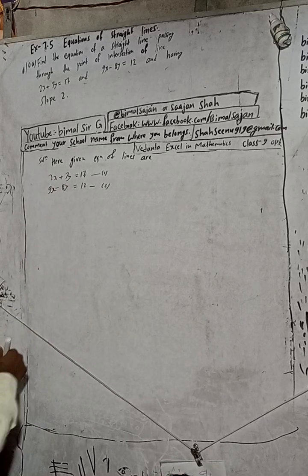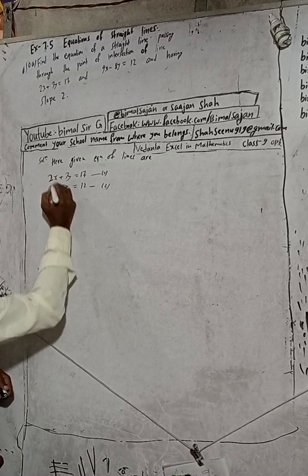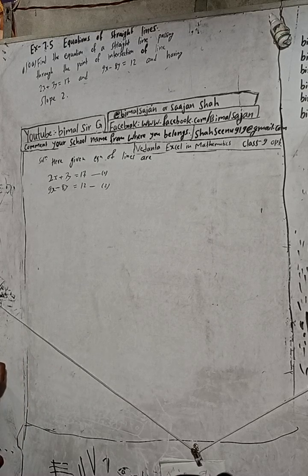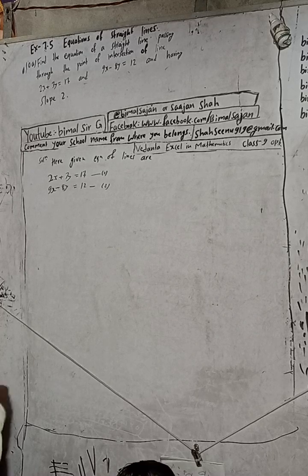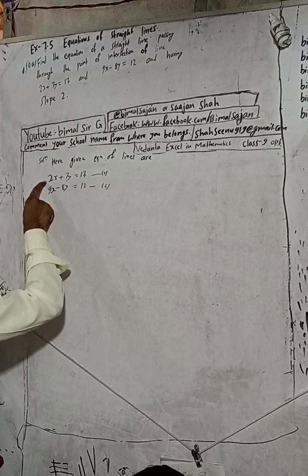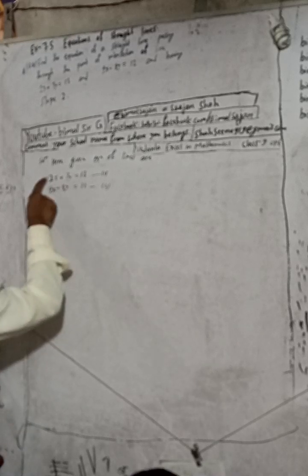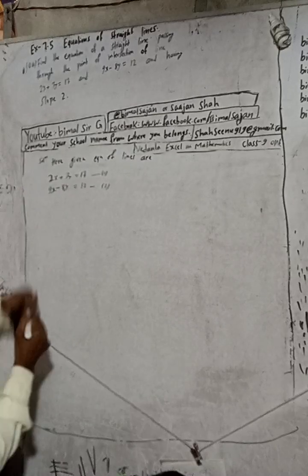To find the point of intersection we have to solve for x and y. The coefficient of x is 2 and 9, and for y it is 3 and 8. We cannot cancel by simply adding or subtracting, so we need to make the coefficients the same. If we multiply equation 1 by 9, we get 18, and if we multiply equation 2 by 2, we also get 18 — so we can then cancel.